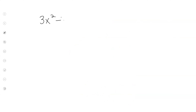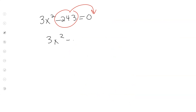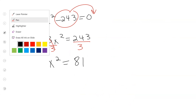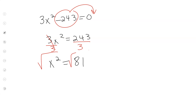Let's say I have 3x² − 243 = 0. First, move this to the other side so that we have 3x² = 243. Now divide by 3. What's 243 divided by 3? It's 81. Then you take the square root of both sides, so x is equal to 9 and negative 9.